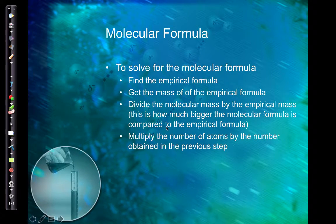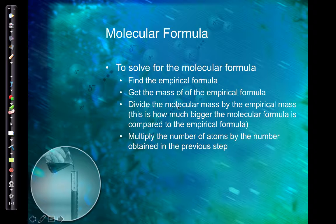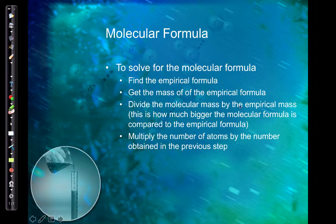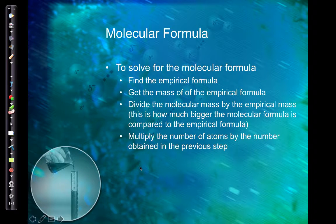To find the molecular formula, you need the empirical formula first — you may have to calculate it. Once you have the empirical formula, find its molar mass. You'll usually be given the molar mass of the molecular formula. Compare: how much larger is the molecular mass versus the empirical mass? If it's twice as large, you have twice the number of atoms, and you can determine the molecular formula from there.